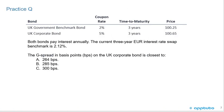Practice question: We have two bonds. A UK government benchmark bond with a 2% coupon, 3-year maturity, priced at 100.25. A UK corporate bond with a 5% coupon, 3-year maturity, priced at 100.65. Both pay interest annually. The 3-year euro interest rate swap benchmark is 2.12%. The G spread in basis points on the UK corporate bond is closest to A, 264 basis points; B, 285 basis points; or C, 300 basis points.